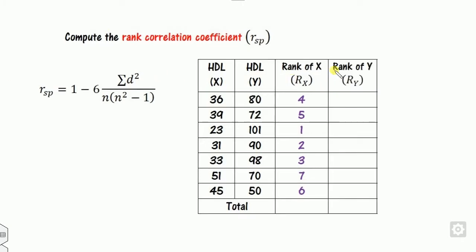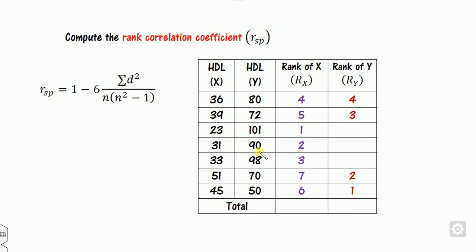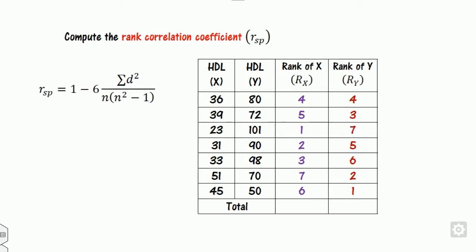Similarly, find the rank of y. The smallest number is 70 — rank 1. The next is 72 — rank 2. Then rank 3, rank 4, rank 5, rank 6, and rank 7 are assigned in order to the remaining values. Based on these rankings, the ranks for both x and y are now defined.